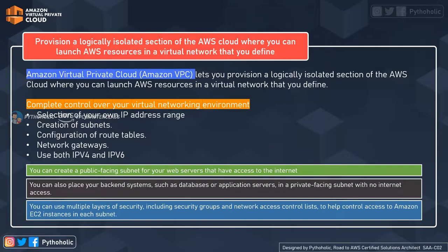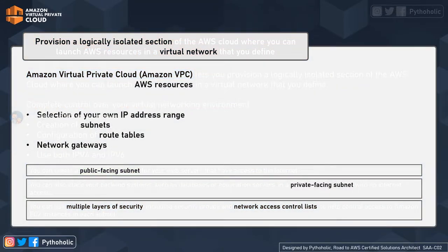You get complete control over your virtual networking environment right from the selection of your own IP address range, creating your own CIDR blocks, creating your subnets. You get the provision to configure the route tables as per your requirements and you can configure your own network gateways. You can also make use of both IPv4 and IPv6 configurations. Here you can create public-facing subnets for your web servers so that they have access to the internet by configuring it with the internet gateway, and also provide restriction to your customers using customer gateways and VPC-only subnets. You can also place your backend systems such as databases or applications in a private-facing subnet with no internet access so that only you and your applications have access to these resources.